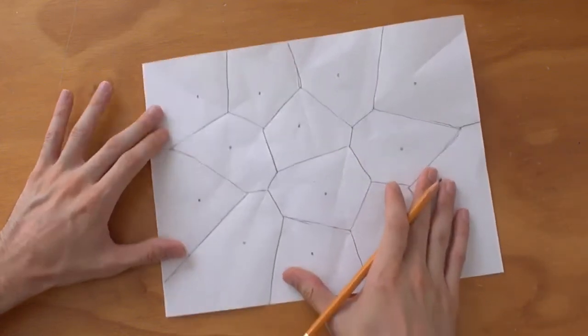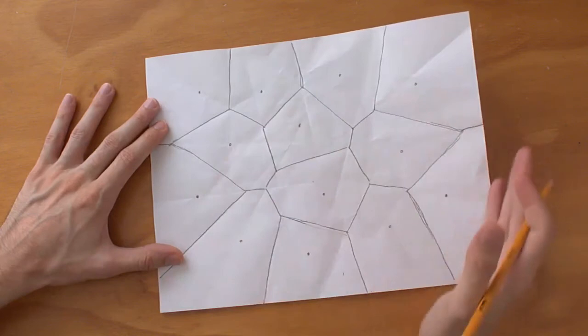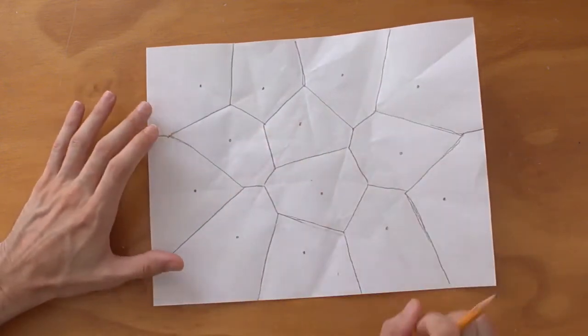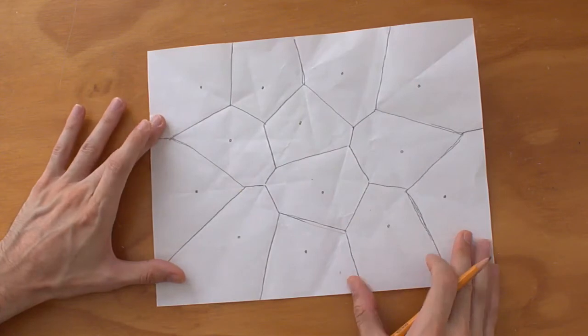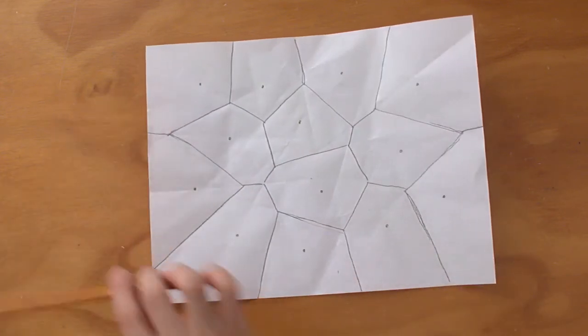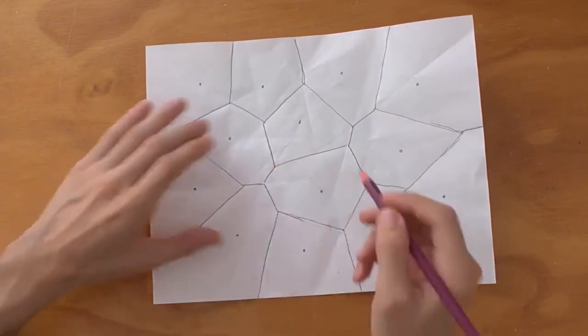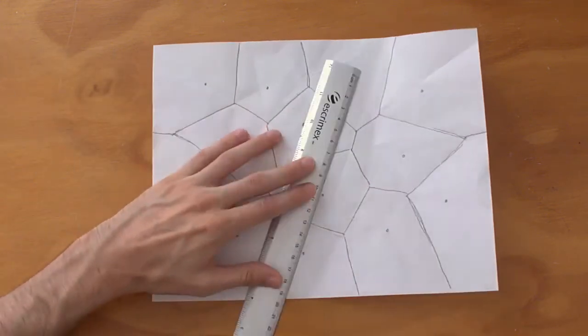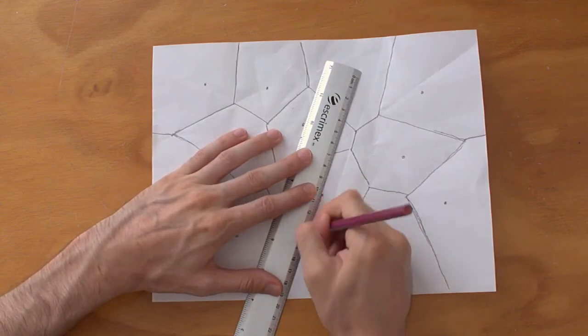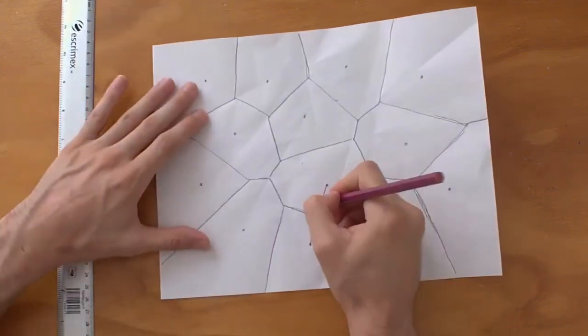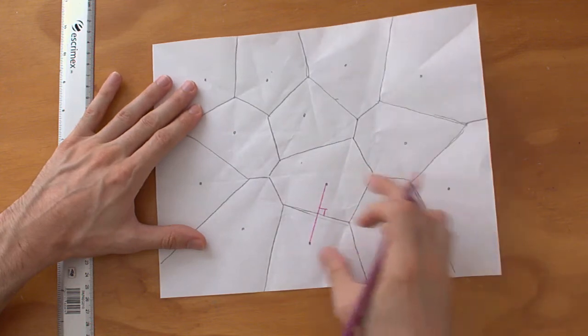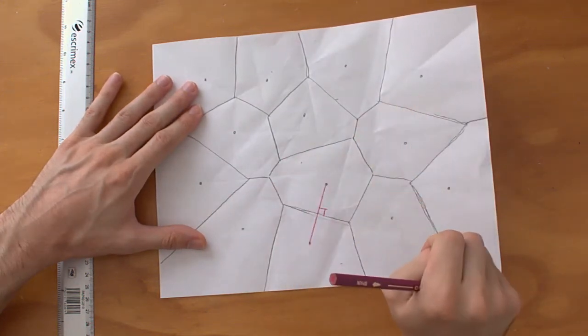So those are the Voronoi cells for these sets of points. This set of points will give us this Voronoi cell configuration. The reason why this works with folding is that if we imagine a line between these two points, we have here a right angle, and the same for all of them.